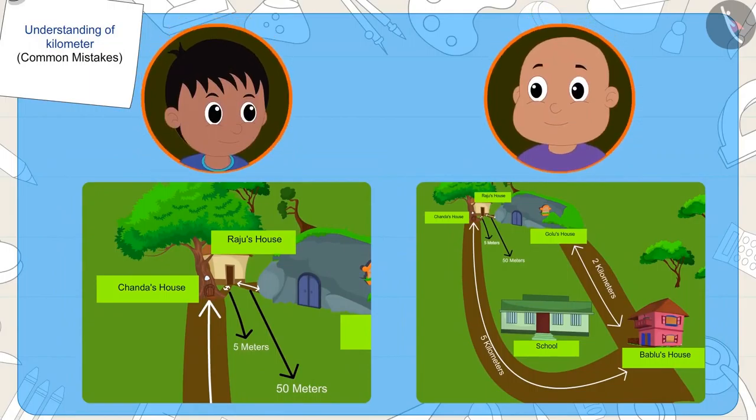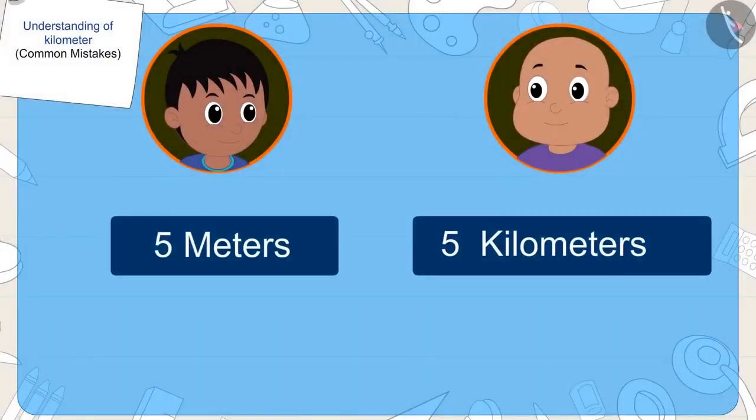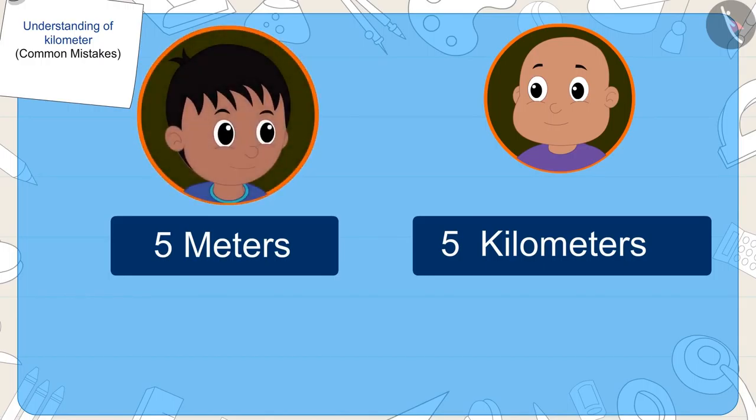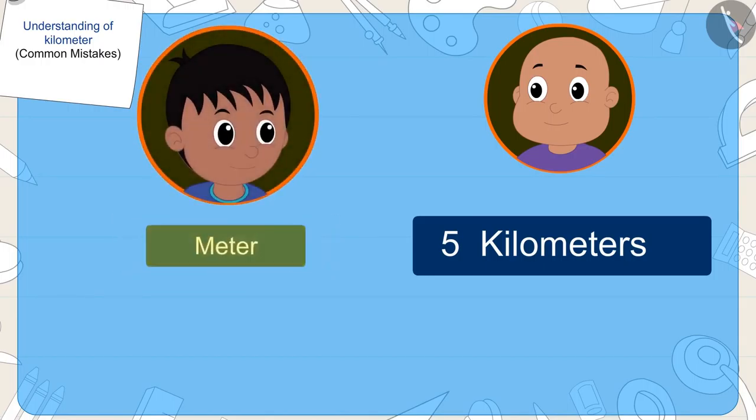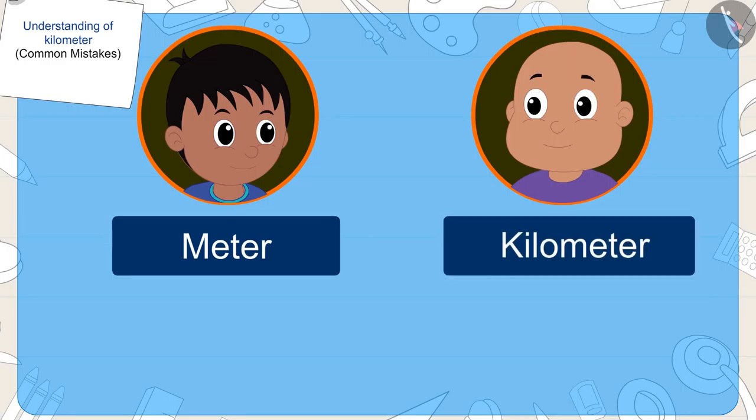Children, can you tell me? Is it right? Even though in the distance, numbers of Raju and Bablu's houses five are the same. The distance unit of Raju's house is in meters, and the distance unit of Bablu's house is kilometers.